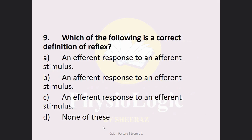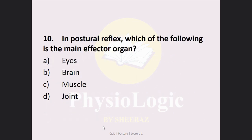MCQ number 9: Which of the following is the correct definition of a reflex? Option A: an efferent response to an afferent stimulus, Option B: an efferent response to an efferent stimulus, Option C: an efferent response to an efferent stimulus, Option D: none of these. The correct answer is Option A — an efferent response to an afferent stimulus.